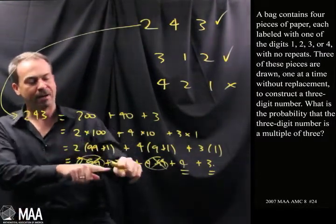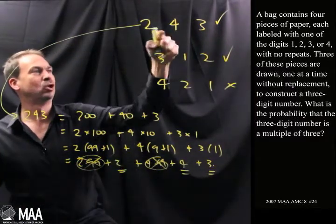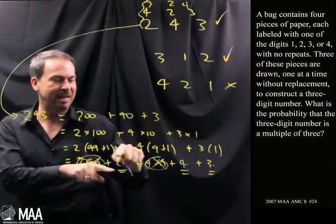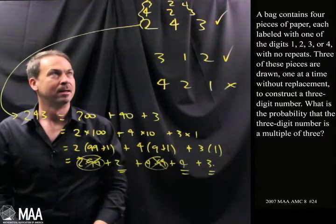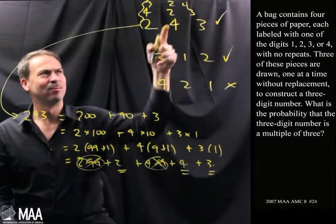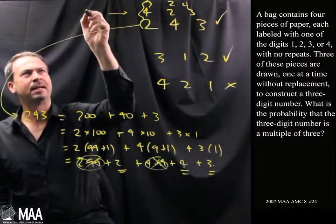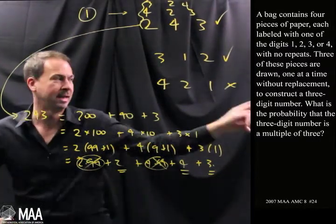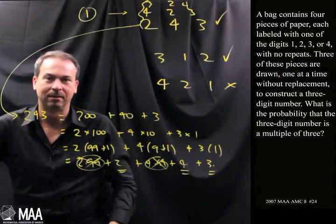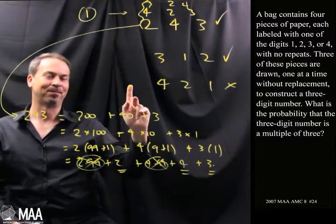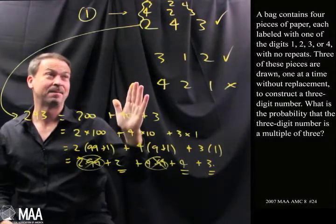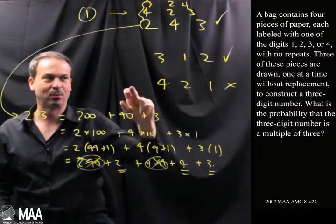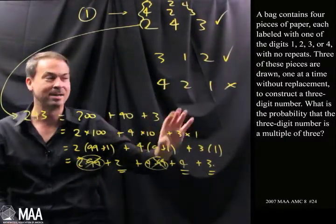Well, the interesting thing here is that if all that matters is the sum of the digits, 2, 4, 3, and 4, 2, 3, and 3, 2, 4, in some sense, they're all going to be the same mathematics, all giving multiples of 3. So what makes these numbers the same? I guess they're all the ones that leave the 1 behind. So anything that leaves a 1 behind as the fourth card still in that bag is going to give me a multiple of 3. Now I feel like I've got a route on how to think about this. If the 1's left behind, I'm guaranteed to get a multiple of 3. If the 2 is left behind, I have to think about it. If the 3 is left behind, I have to think about it. If the 4 is left behind, I have to think about it.